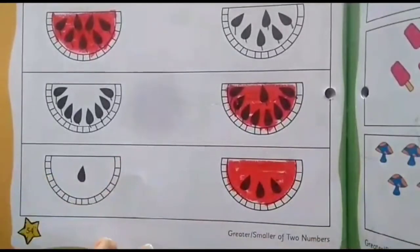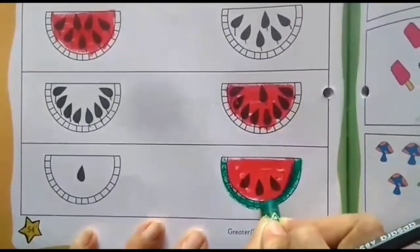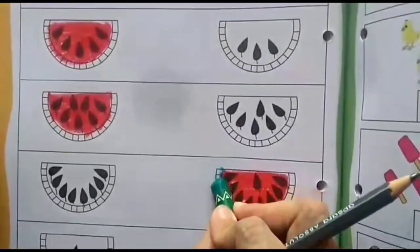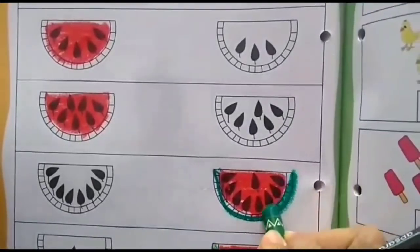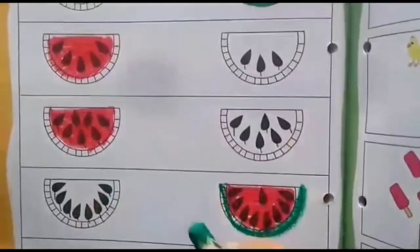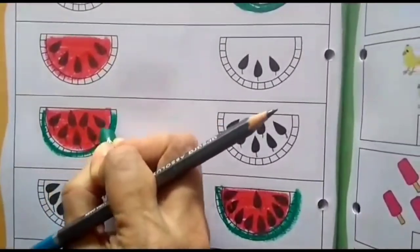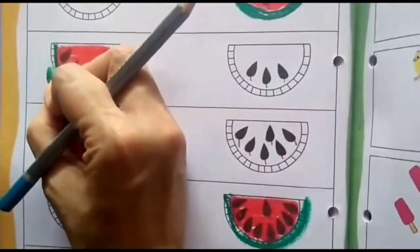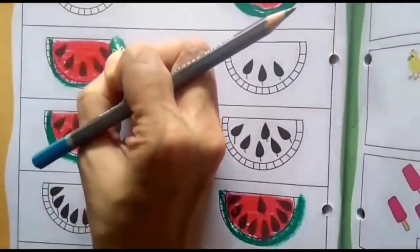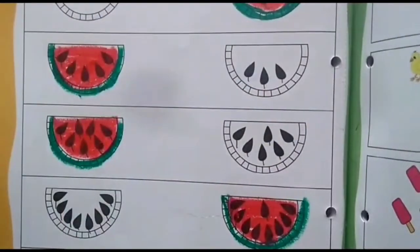And later on we will color these greens also with green the way I am coloring. But not all. Only with the watermelons with more number of seeds the way I am doing. So we are done with the work. This is the end of video 2.